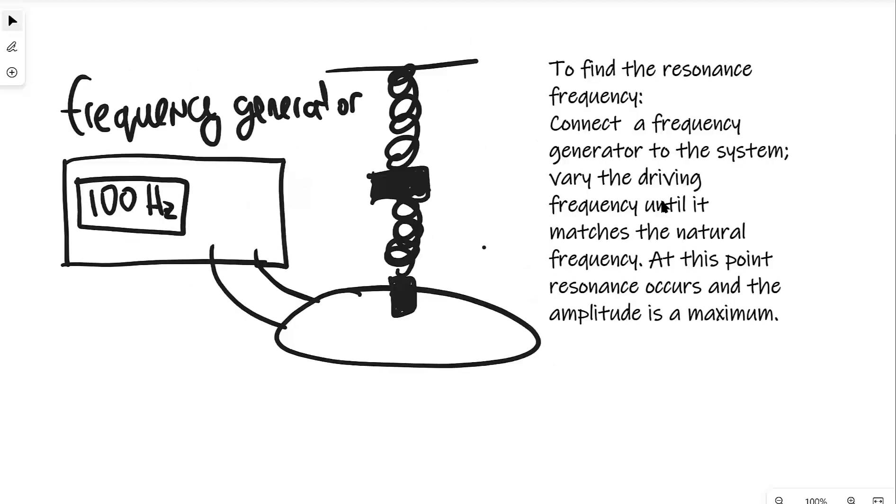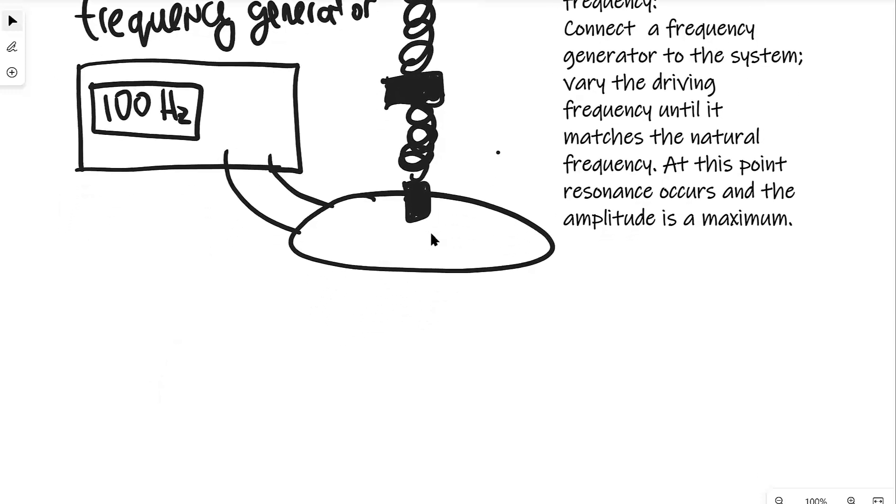Okay we're going to revise one more and that is how to find the resonance frequency. We always find the resonance frequency by using a frequency generator, this is also known as a signal generator by the way. We're going to vary the driving frequency until it matches the natural frequency. The frequency generator could be connected to any object, I just have a combination of some springs over here which will oscillate safely for instance, but it could literally be many other objects. Now at this point the resonance will occur and the amplitude will be at a maximum when the frequency matches the natural frequency.